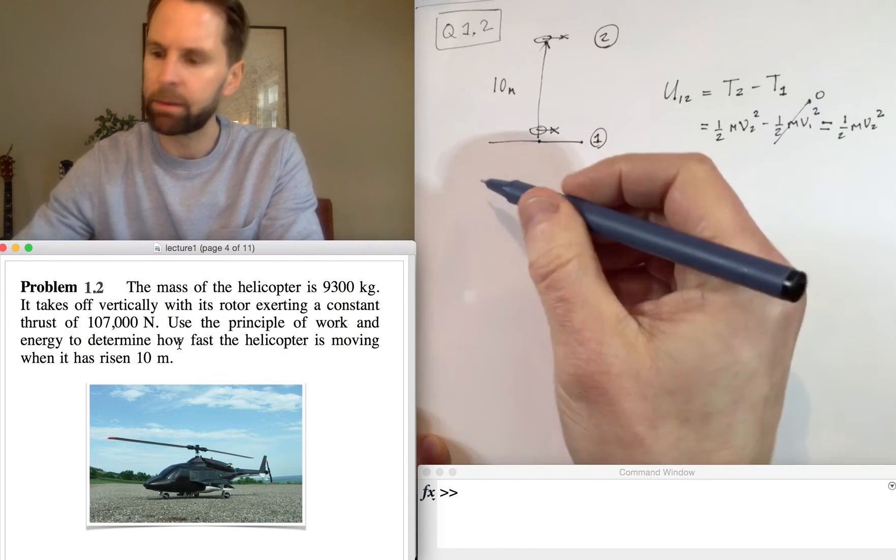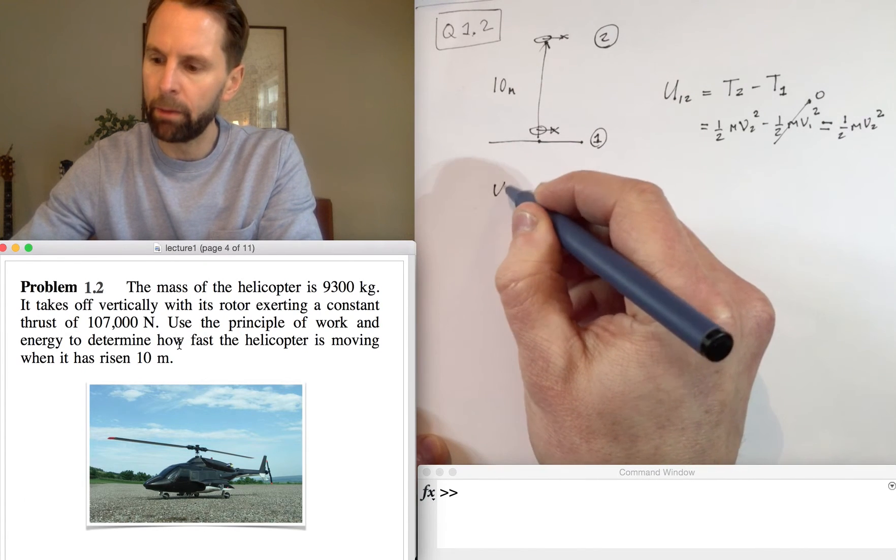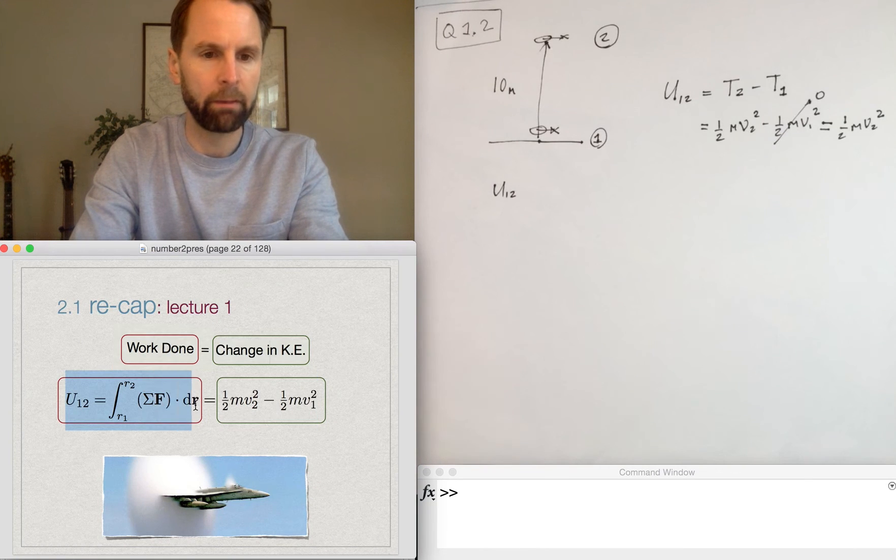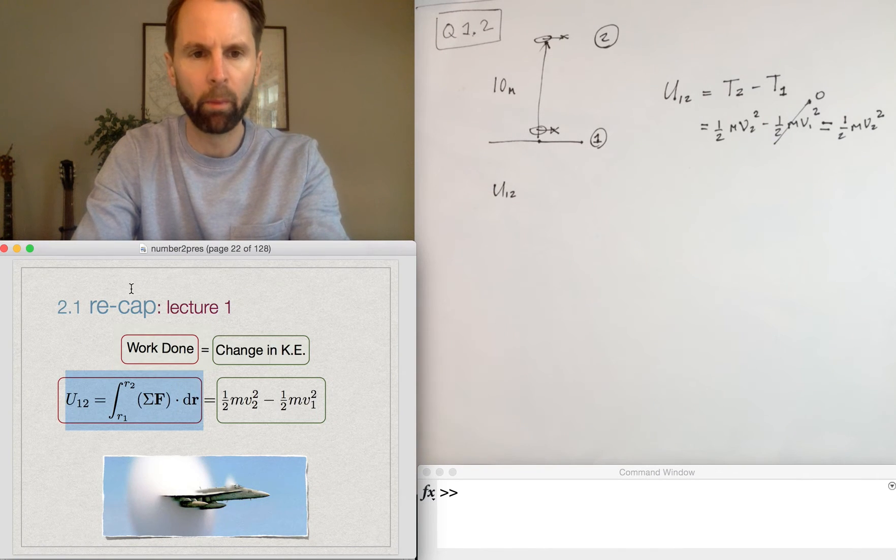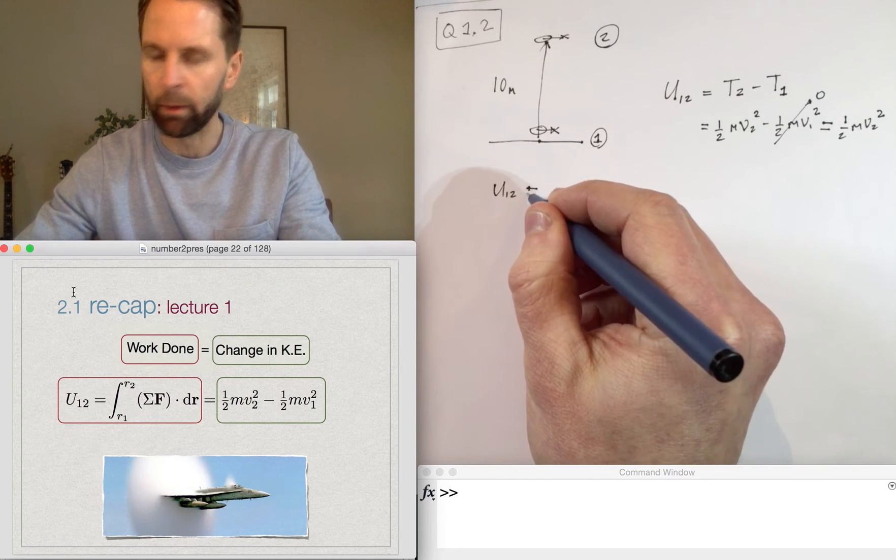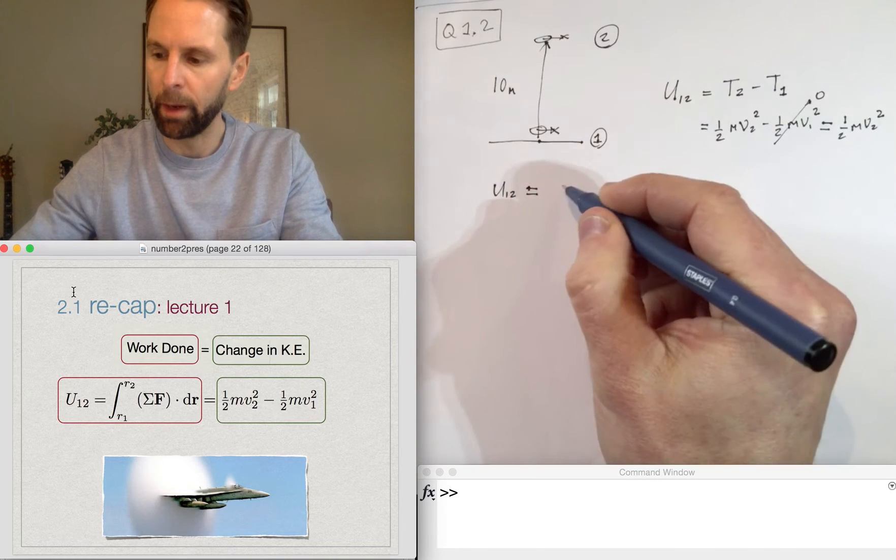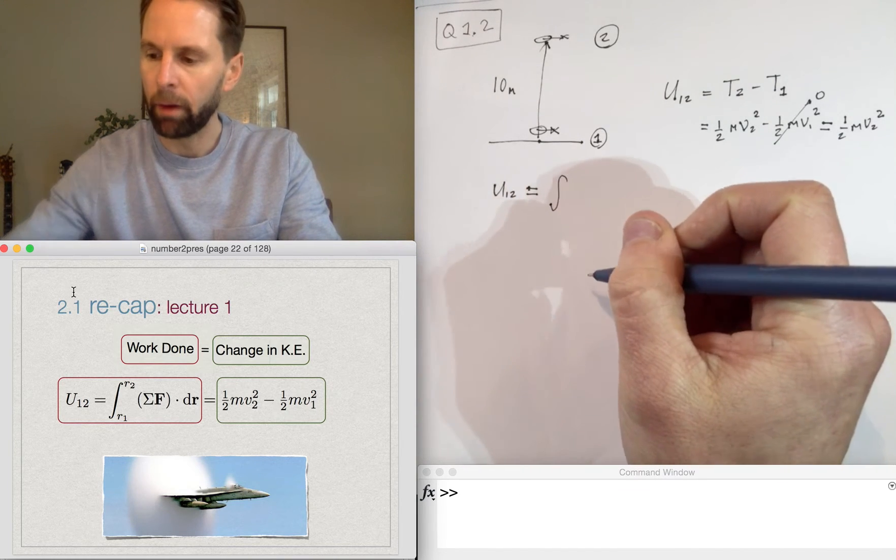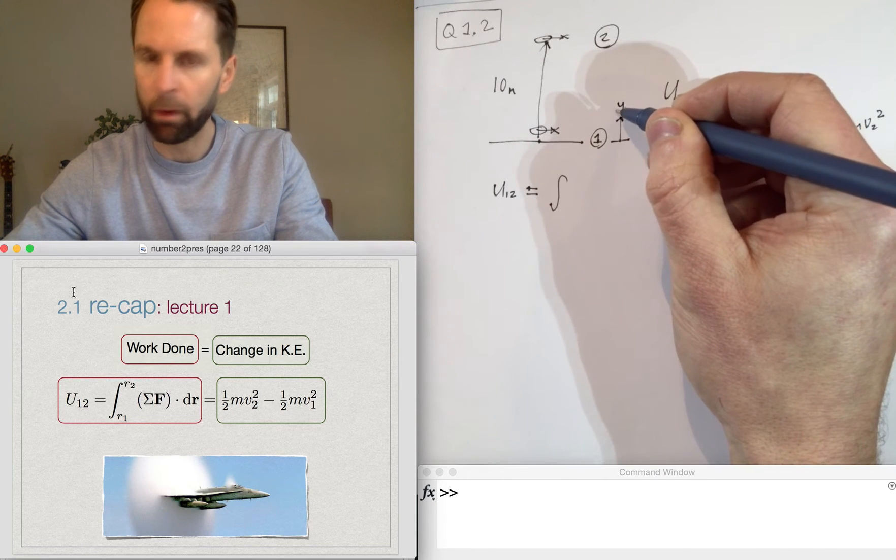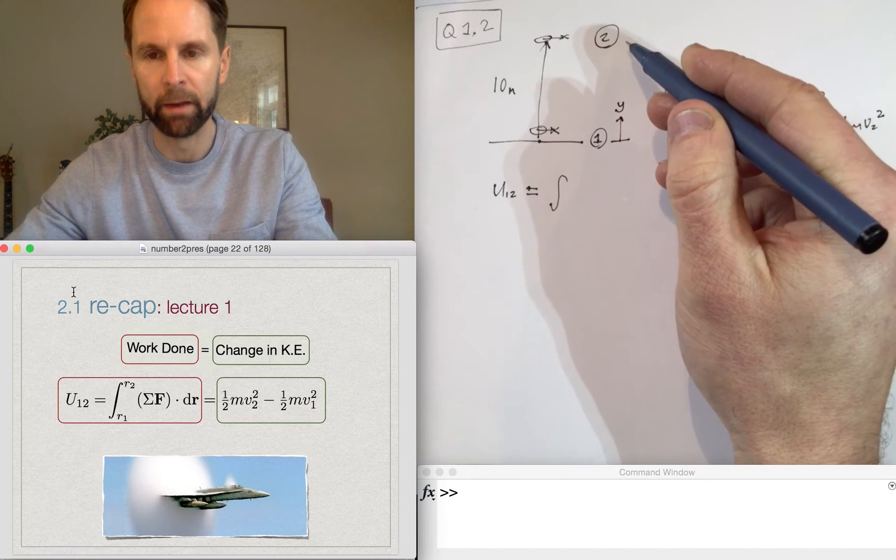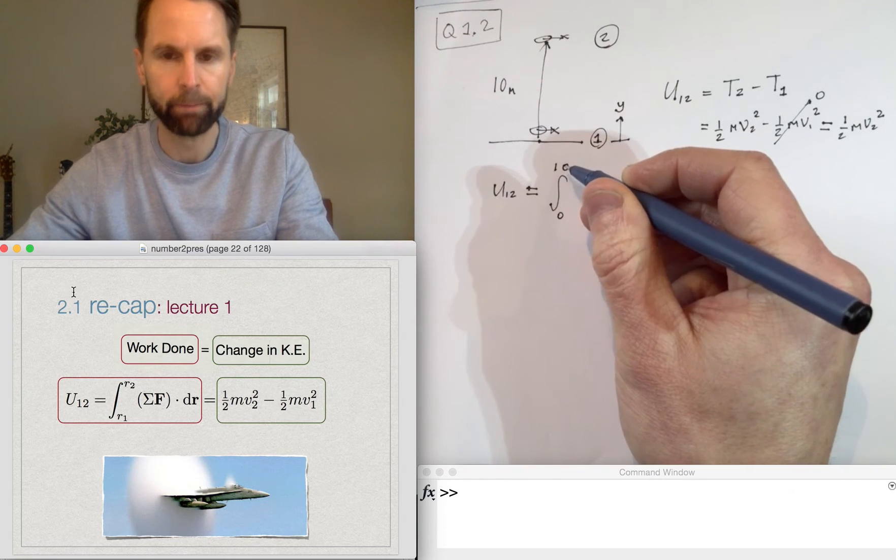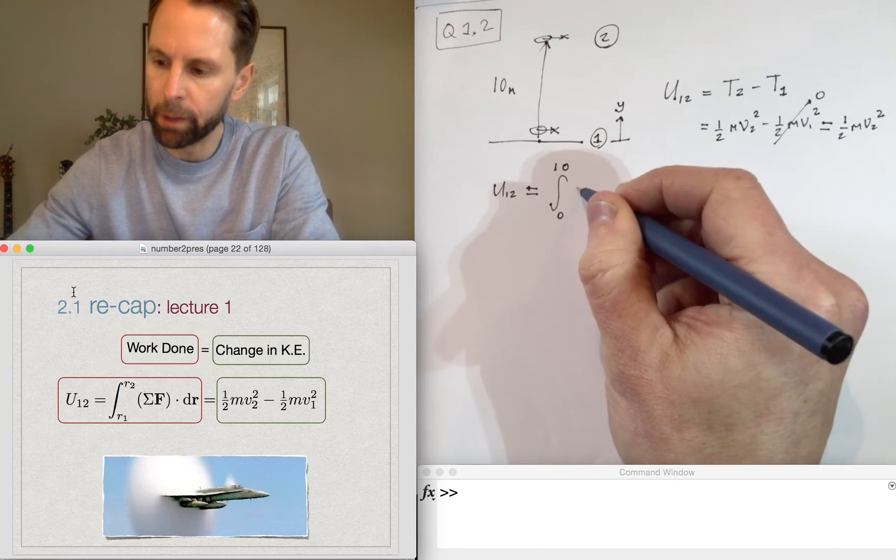So let's write down our general expression from our lecture of the work done, and we'll show that we don't need anything quite that complicated. We're going to integrate over a distance or a position, and I'll define y as being zero at one and 10 at two, so we're integrating from zero to 10 the resultant force with respect to y.